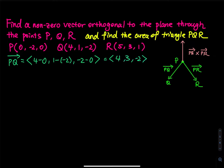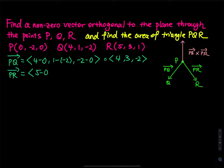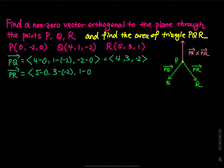And then PR: that is 5 minus 0, then 3 minus negative 2, and then 1 minus 0. And then this is 5, 5, 1.